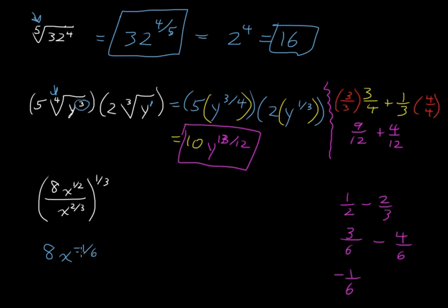Well, a negative exponent makes that go back in the denominator. So let's continue this. This is all to the 1 third. Okay, so that is 8 over x to the 1 sixth. And then all of this is raised to the 1 third.